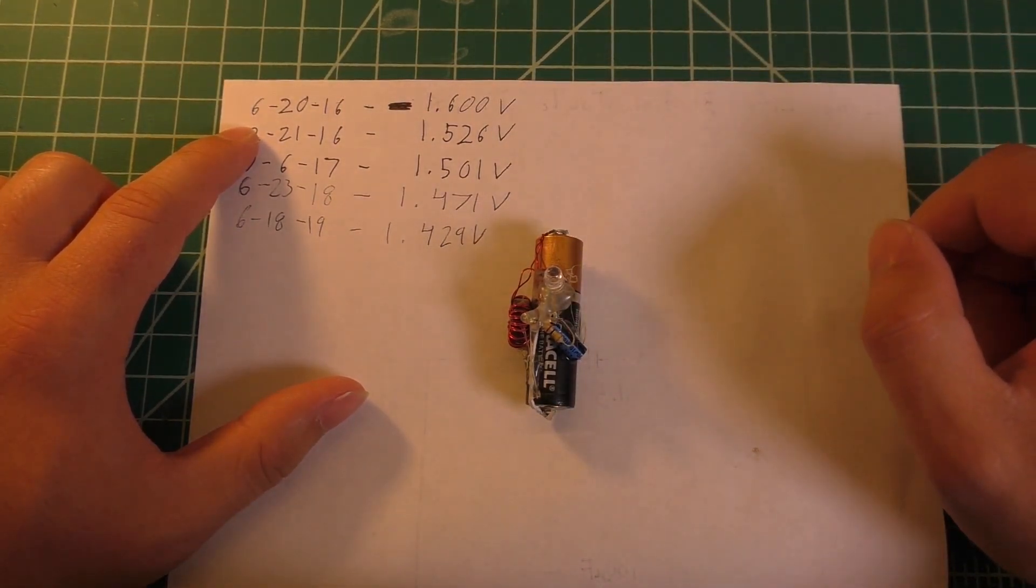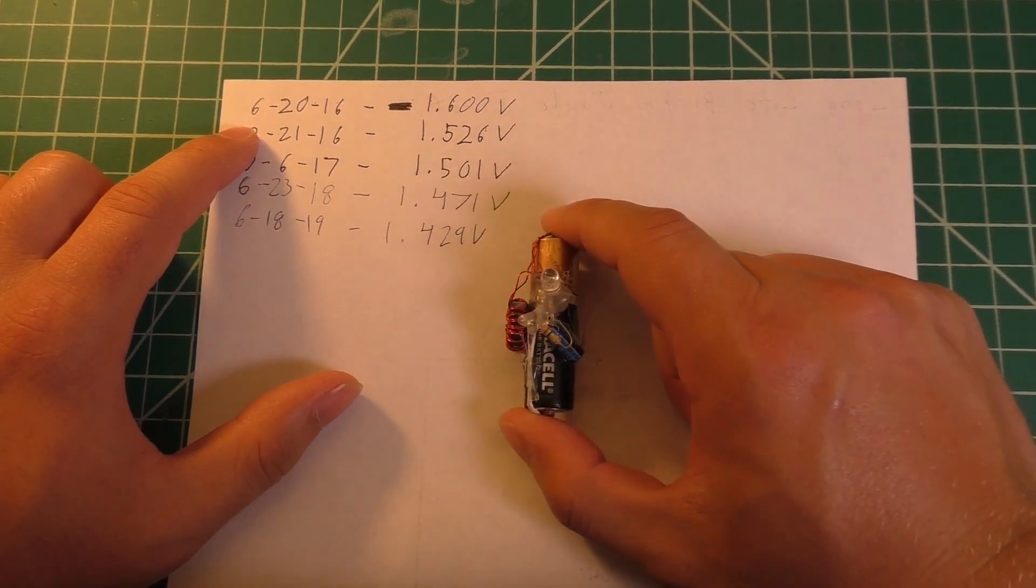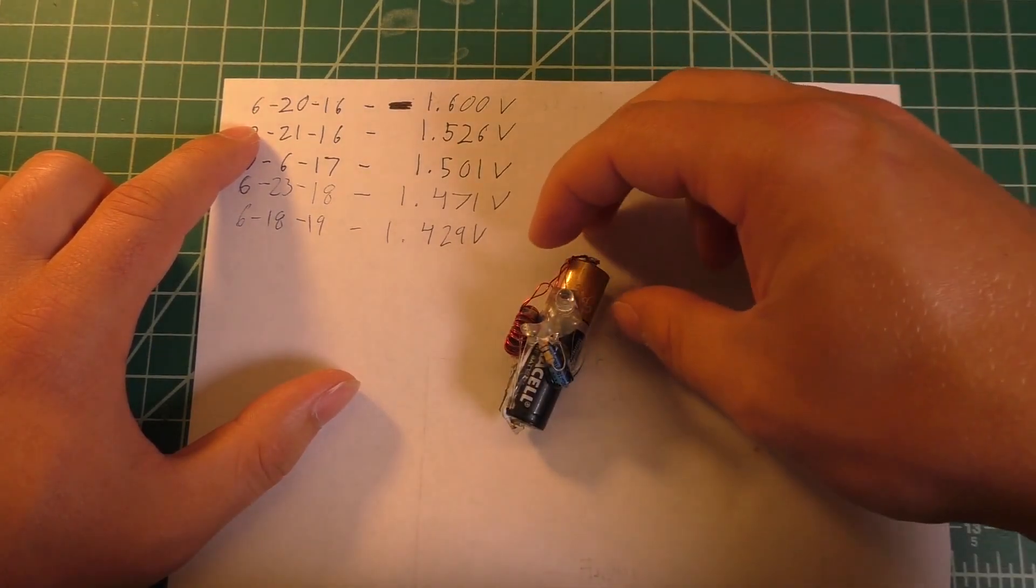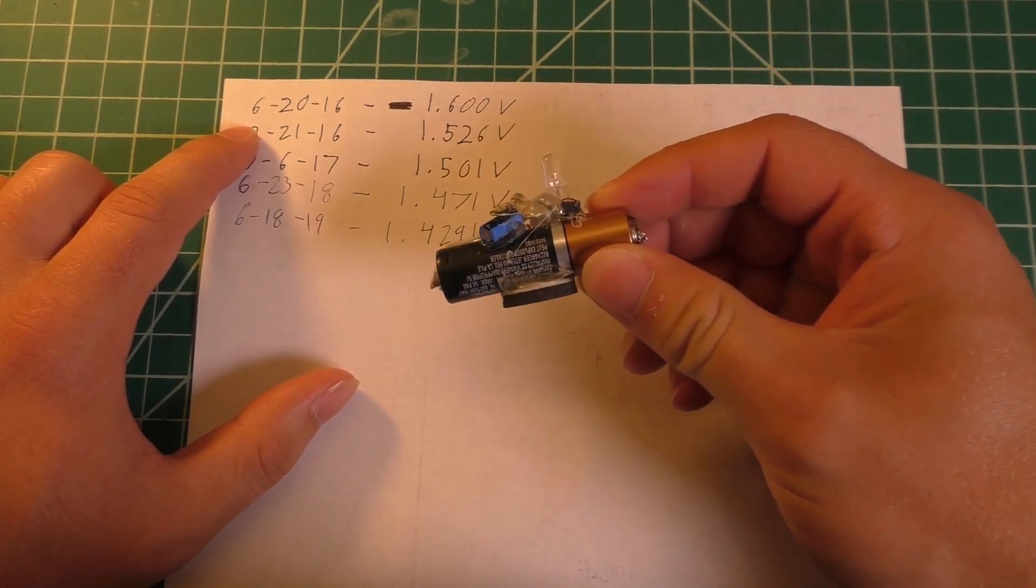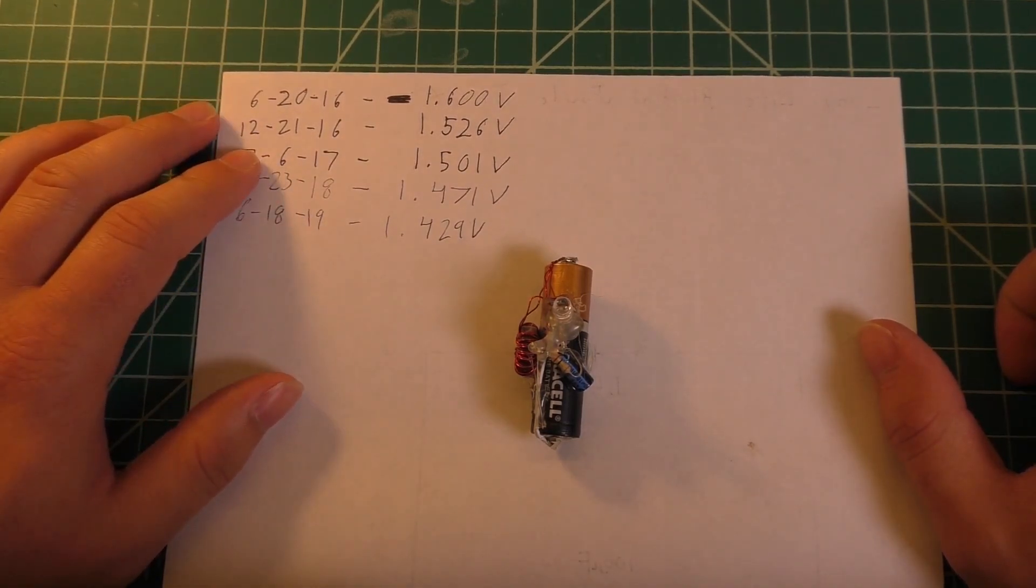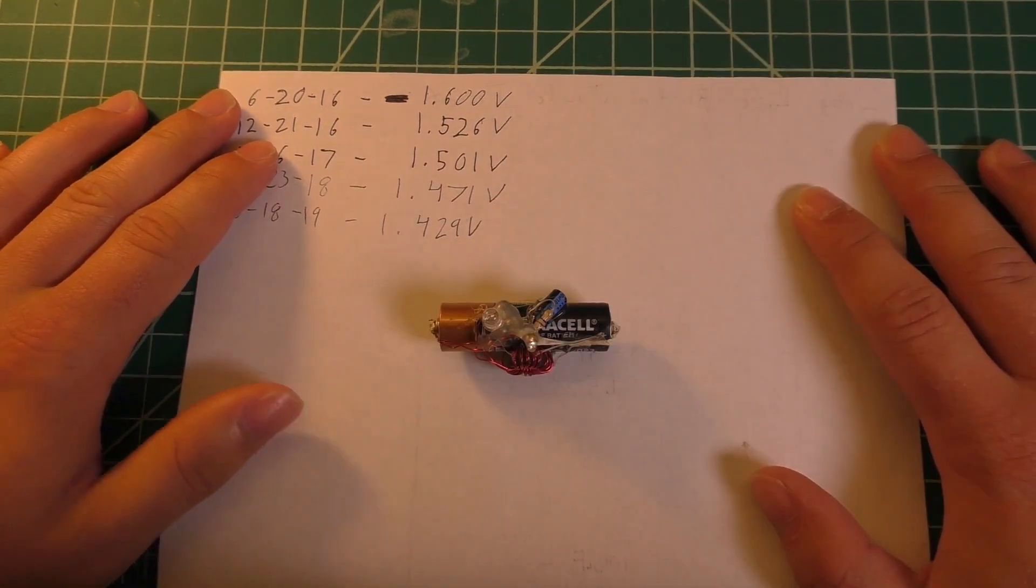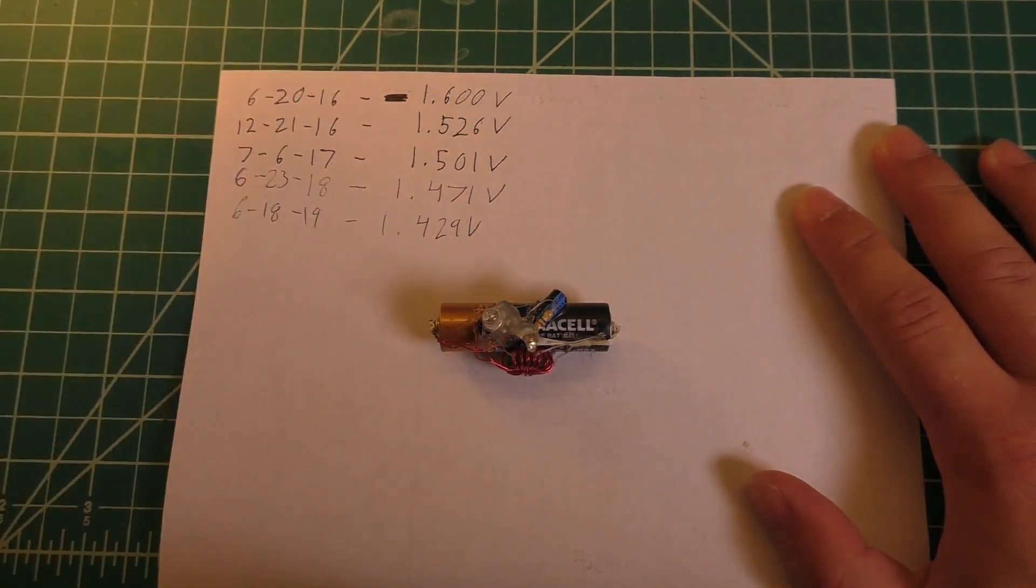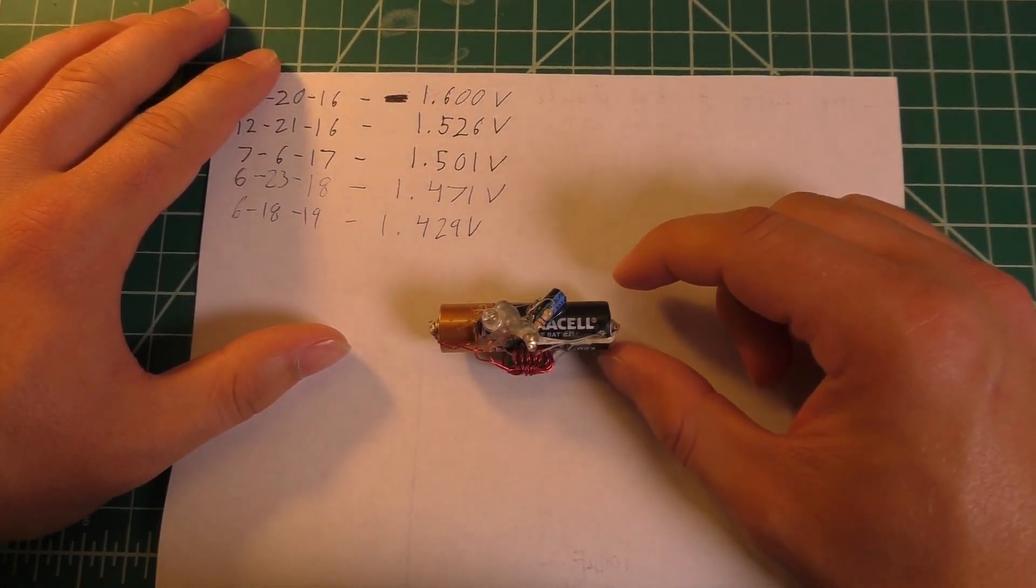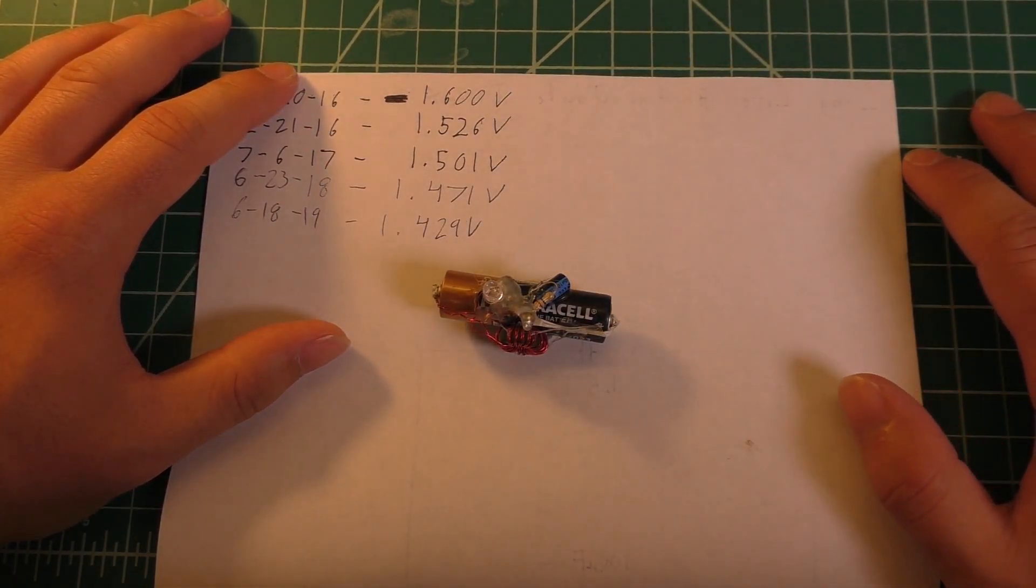Now the real question here is whether or not the circuit is going to drain the battery before the self-discharge of the battery starts to play a significant role. So looking at the data that I've collected over the last three years, I'm expecting this to be able to last at least another five years. Now as I said, in theory we should be able to easily get 10 more years, but I think the self-discharge of the battery might prevent that from happening. But I would expect this to last at least another five years if not more.